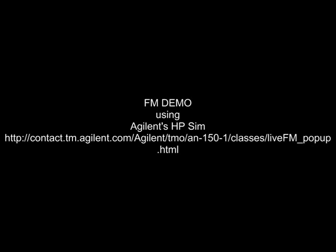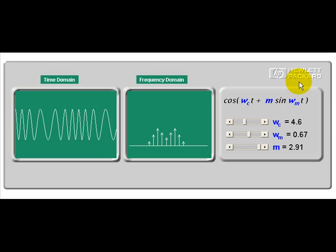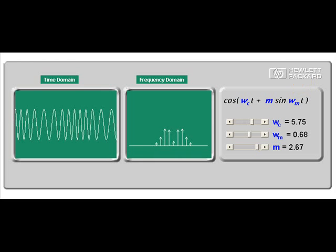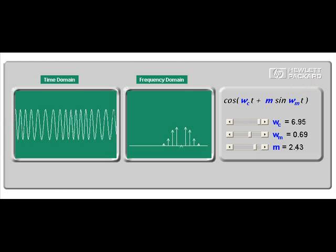Here's an FM demo using the Agilent's 8-piece simulation located at this website. So here we have a frequency modulation scheme. The frequency of a rapidly varying signal is modulated by a slowly varying signal, or in other words, our message.